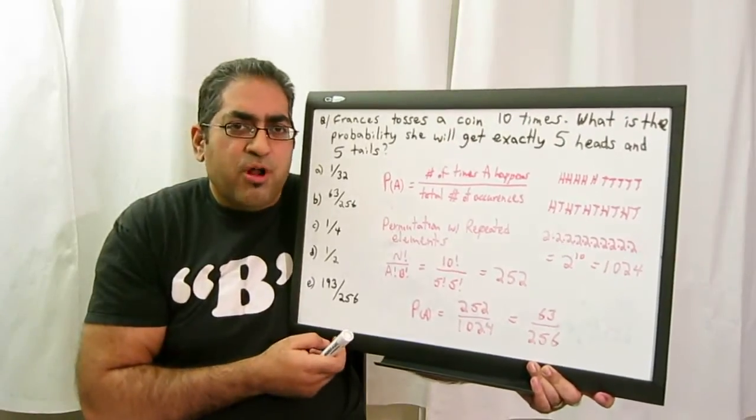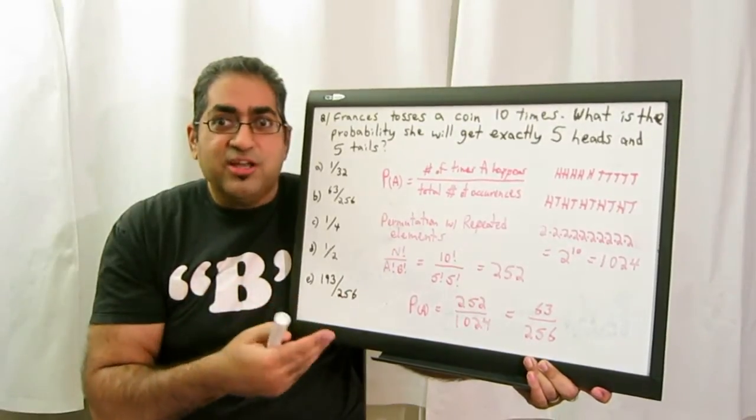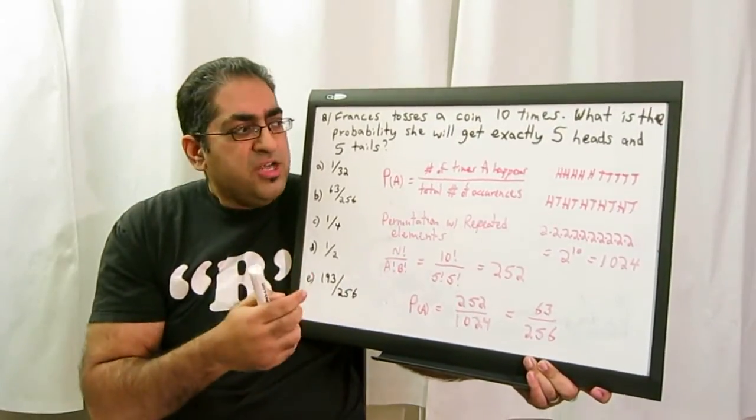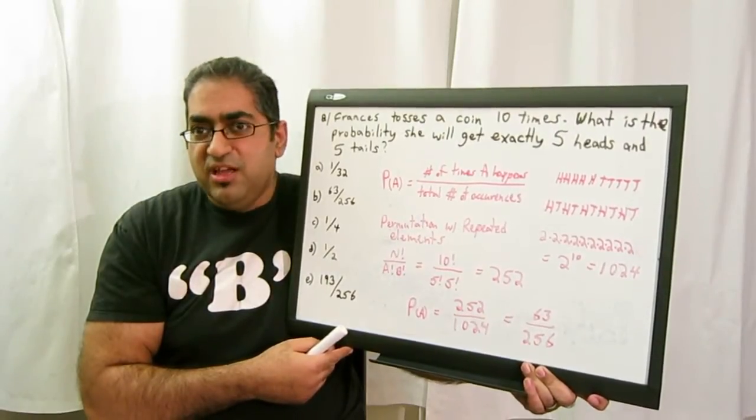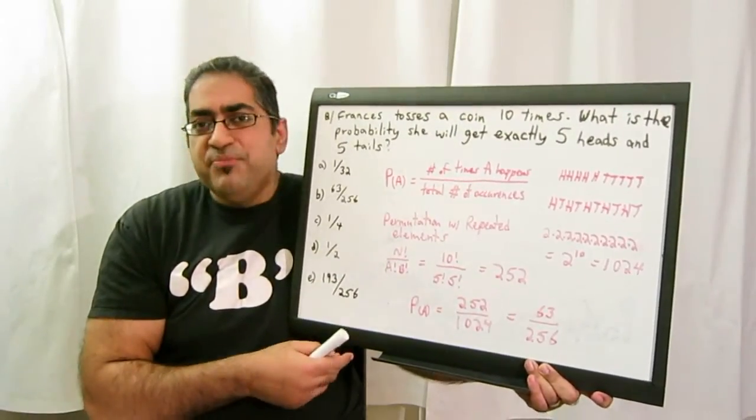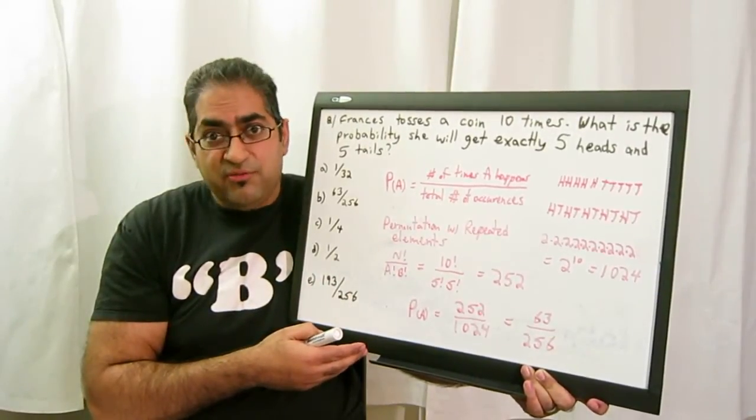The reason this problem is more complicated is, first off, instead of tossing a coin two times or three times, we're tossing a coin ten times. On top of that, it requires some knowledge of permutations and combinations. And even more than that, advanced permutations in the sense that there's a scenario of permutations with repeated elements, which are involved here.